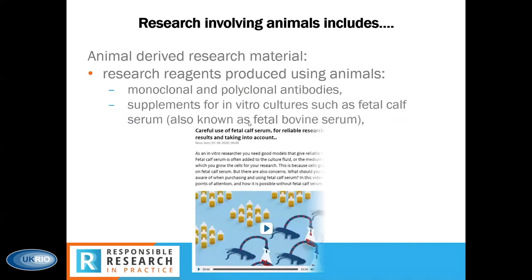Another example of animal-derived research reagents is supplements for in vitro cultures. Research teams culturing cells — even of human origin — may be using in vitro cultures supplemented with fetal calf serum (FCS), also known as fetal bovine serum. This is a byproduct of the dairy industry prepared from blood collected from unborn calves during slaughter. There are both animal welfare, ethical, and reproducibility issues raised with the use of FCS — refer to the primer and a short video produced by the Netherlands National Committee for the protection of animals used in scientific procedures.